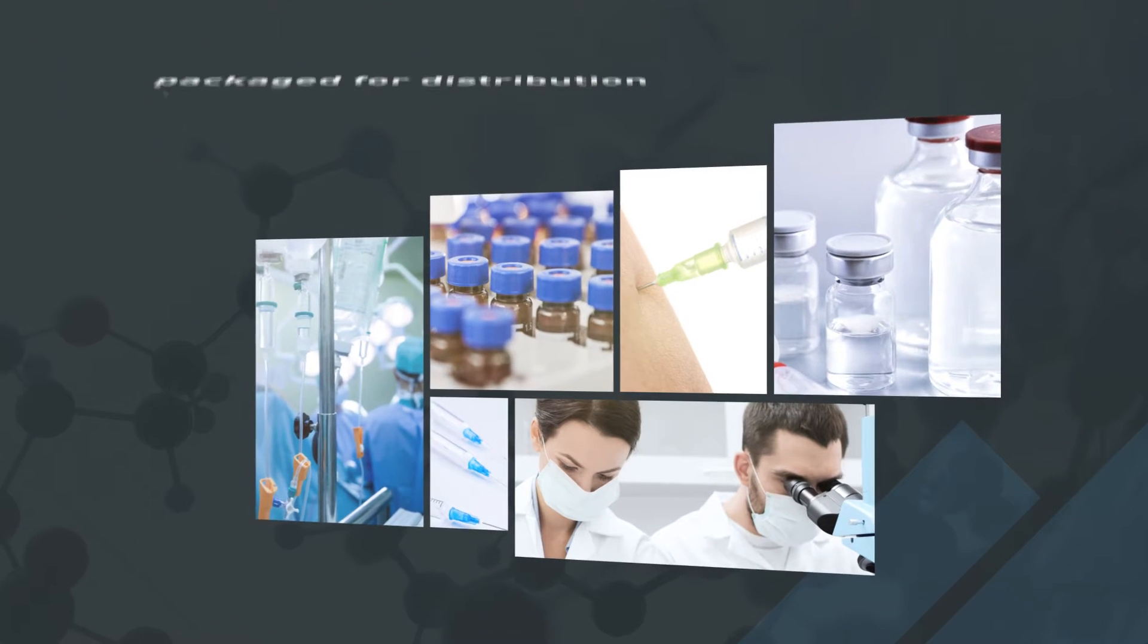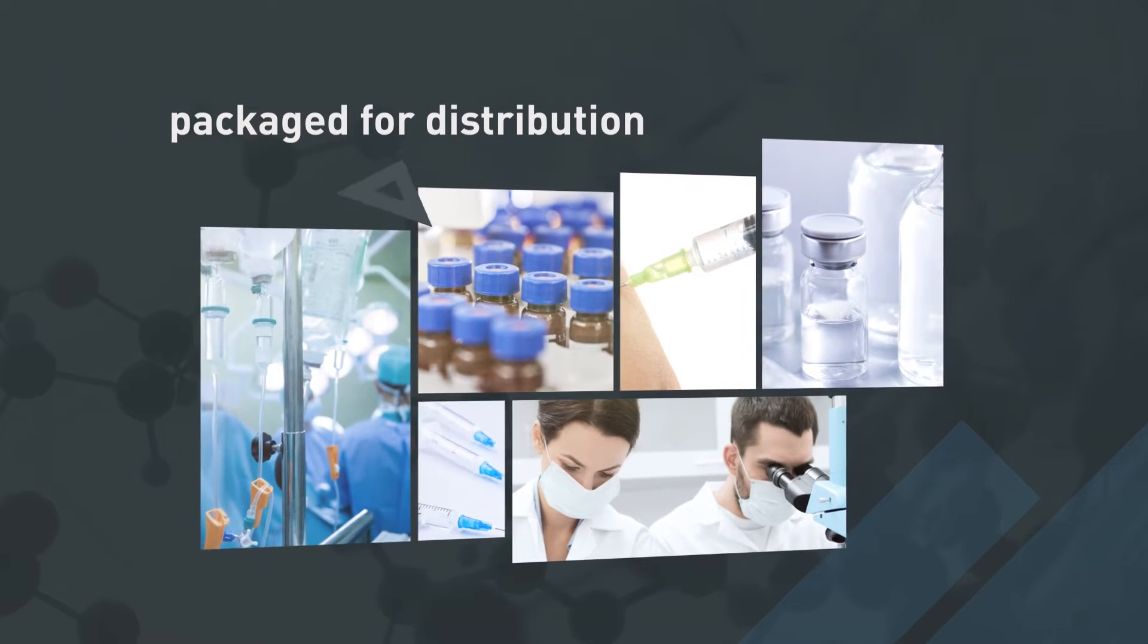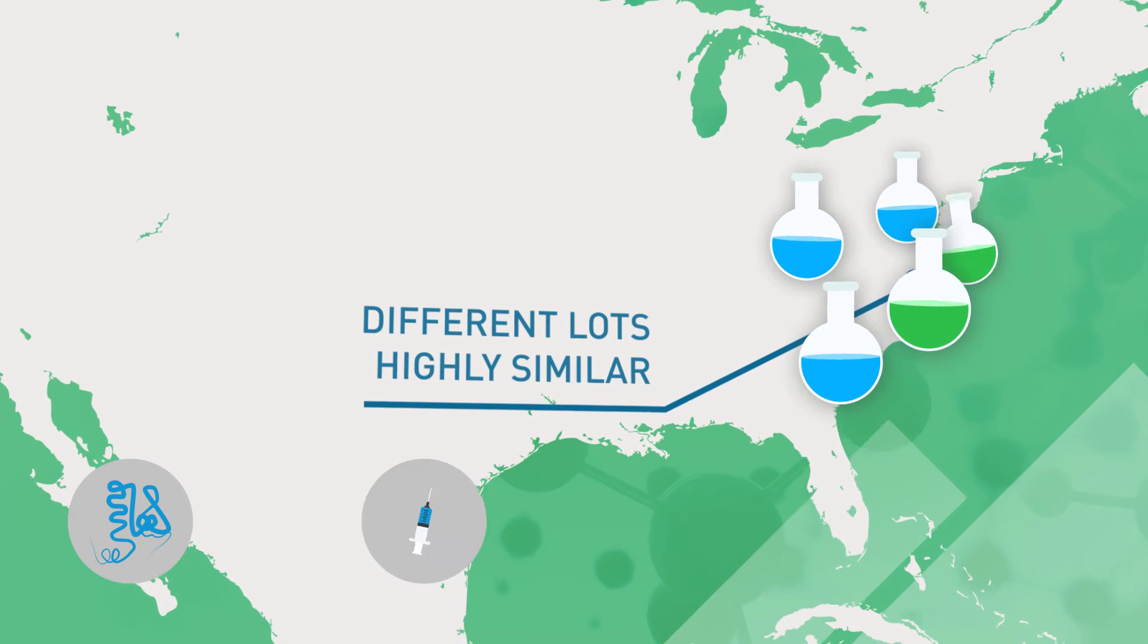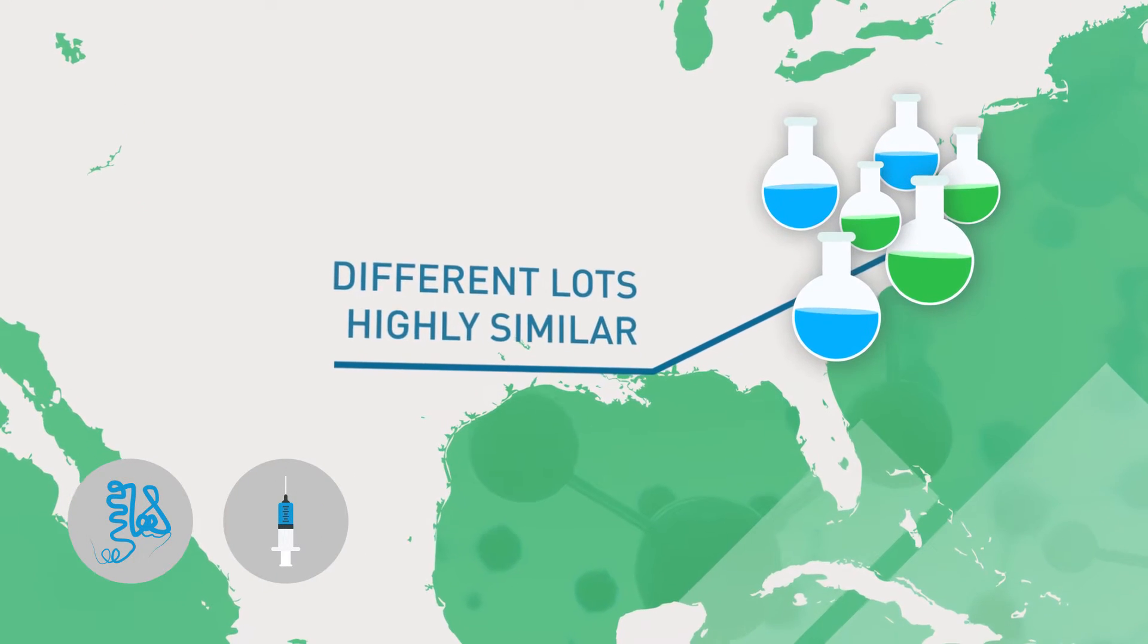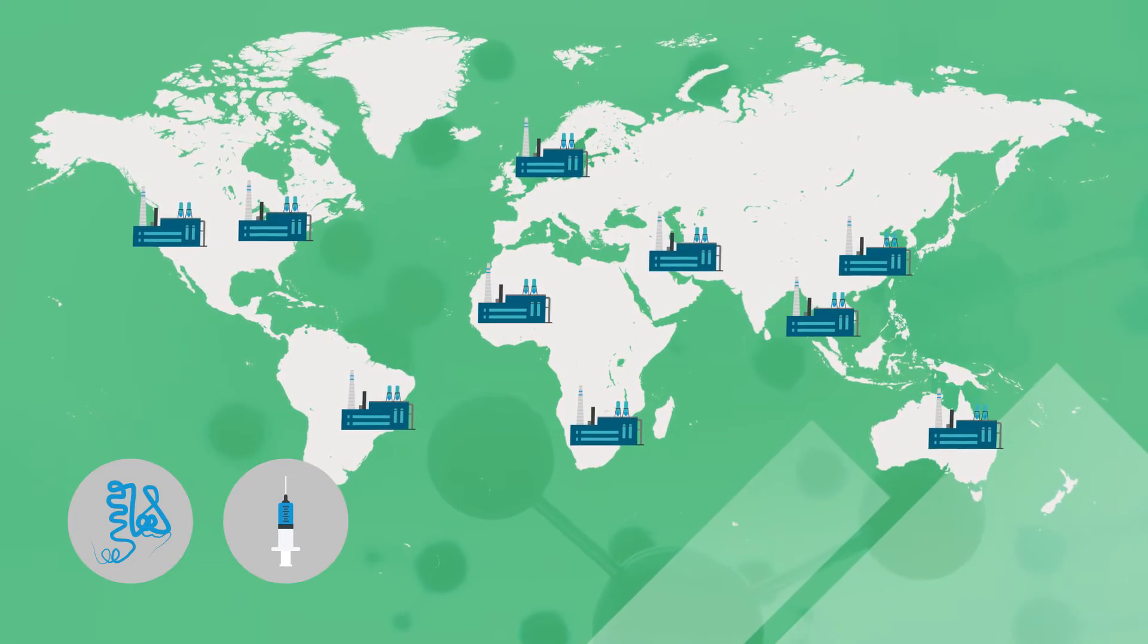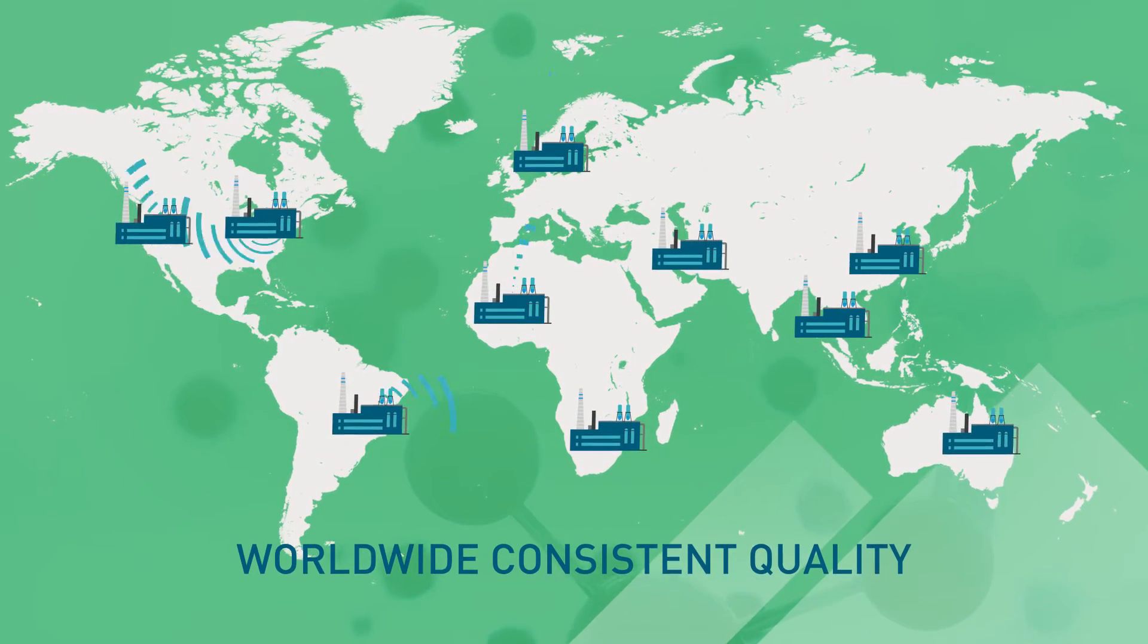The final drug product is packaged in syringes or vials for distribution. The drug product is also tested to ensure that different lots are highly similar in critical quality attributes. Lots from different manufacturing sites are also compared to make sure they are highly similar.